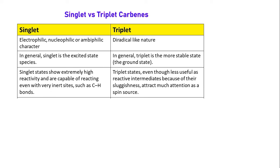Singlet carbene can be electrophilic, nucleophilic, or ambiphilic — meaning it can simultaneously act as electrophilic or nucleophilic. But when it is triplet, it will have diradical-type nature because there are two unpaired electrons present.